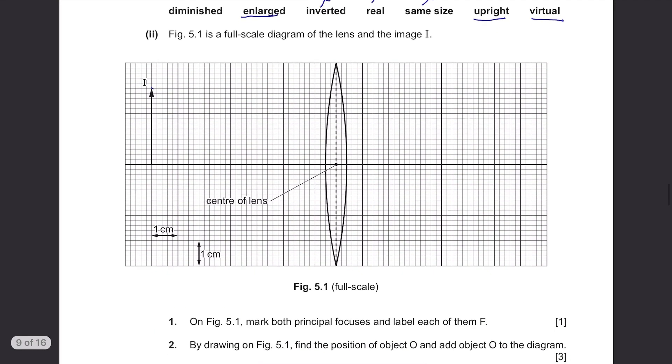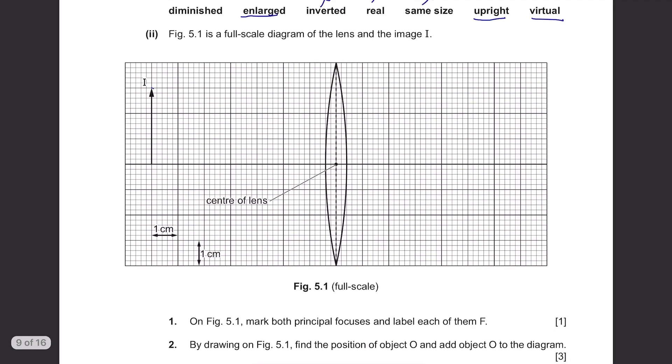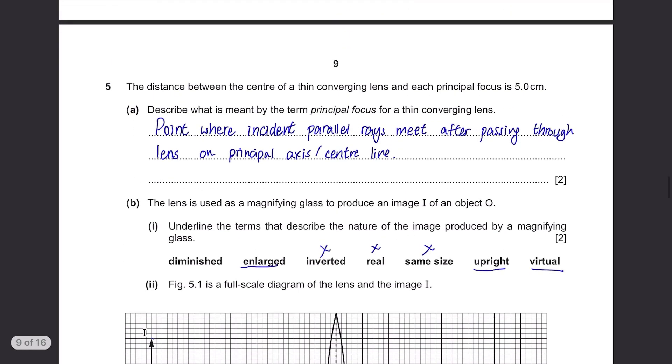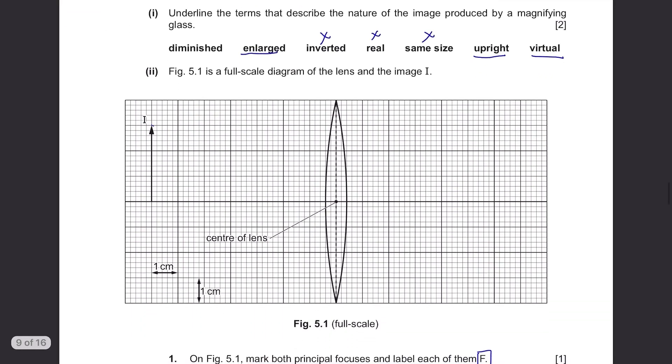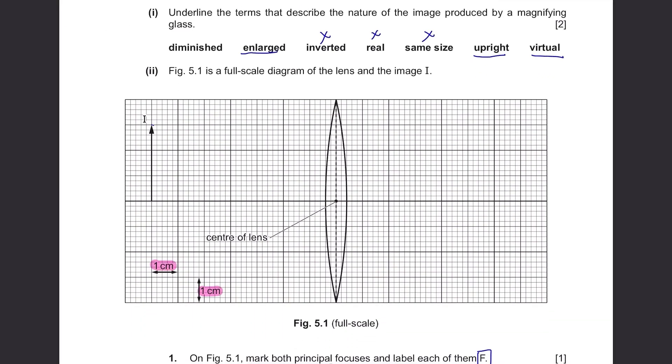Figure 5.1 is a full-scale diagram of the lens and the image I. On figure 5.1, mark both principal focuses and label each of them F. The question says the principal focus is 5 cm so we should label two points that are 5 cm away from the optical centre.